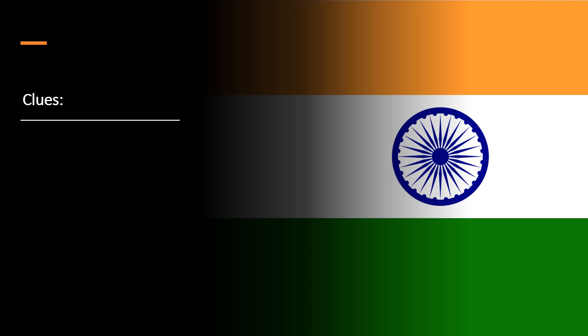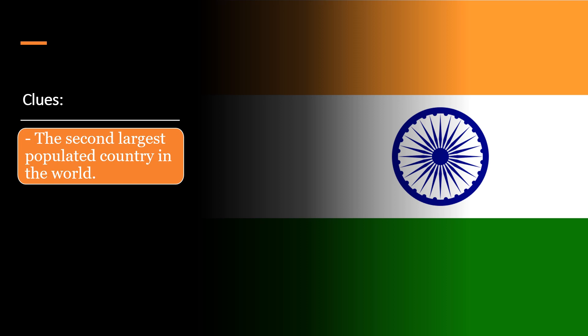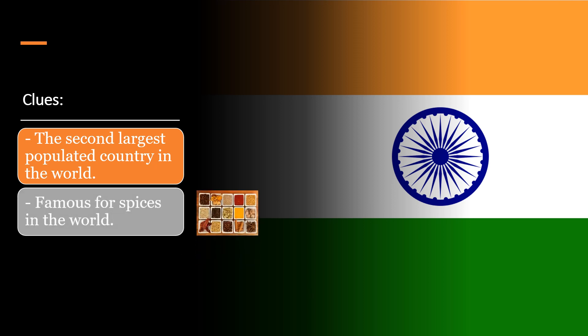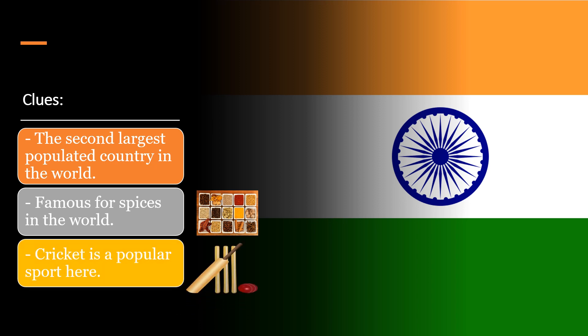I will now provide you with the flag of a country and give you a few clues to identify it. The first clue is: it is the second largest populated country in the world. The second clue is: it is famous for spices in the world. The third clue is: cricket is a popular sport here. Yes, dear children, you are right — we are speaking about India.